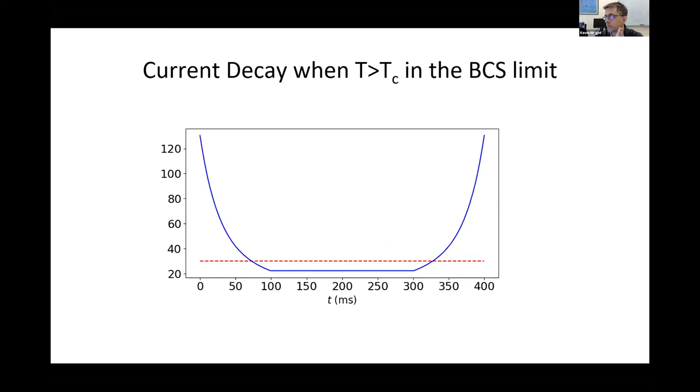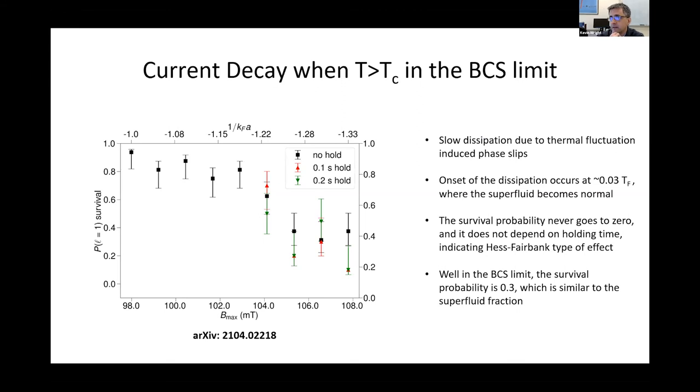What we did that was unusual was take advantage of the fact that we could tune the interactions in the system. We started off near unitarity, stirred the system up into the L equals one current state, which we can do very reliably under those circumstances. We know that the critical temperature falls off exponentially in the BCS limit. So we started ramping the magnetic field to see what happens and how far we can get before the current decays. We have to go back into the superfluid state to know if the current decayed. Our procedure is to ramp up to high field, hold for some duration of time, and then come back down to low field and perform the current detection.